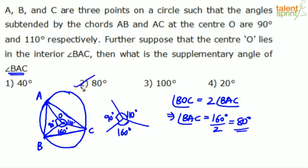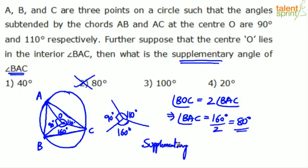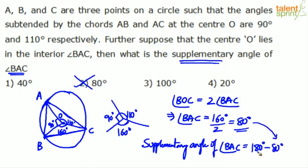But 80 degrees is not the final answer — don't mark option 80 in a hurry. The question asks for the supplementary angle of BAC. The supplementary angle of angle BAC is 180 minus 80, which comes out to 100 degrees — option 3.